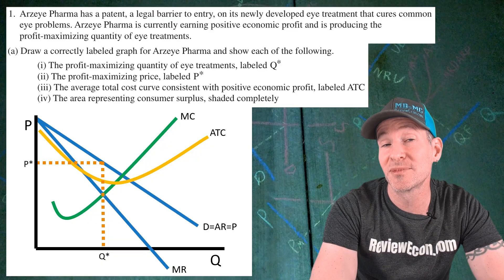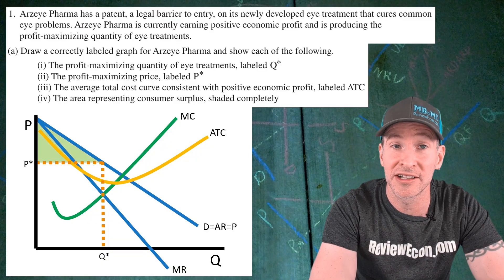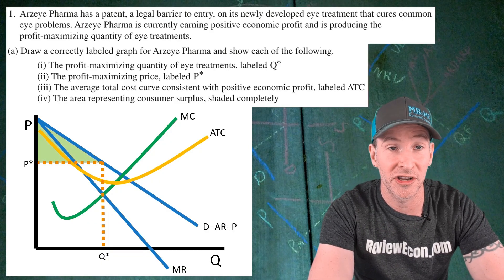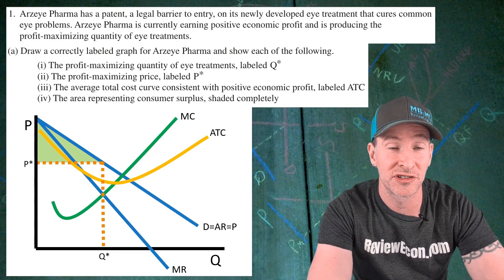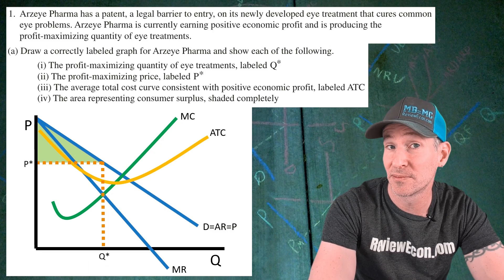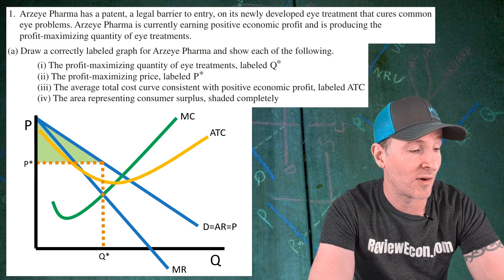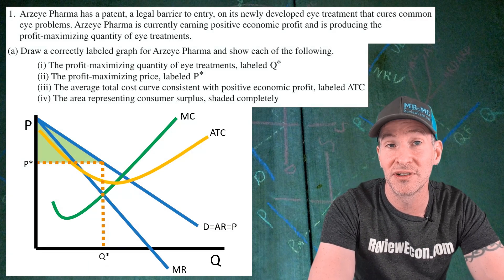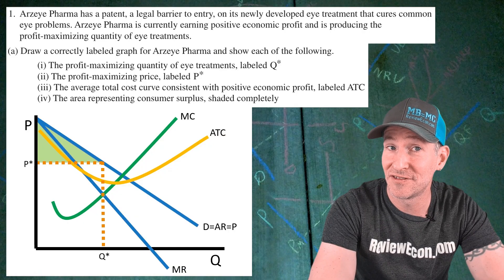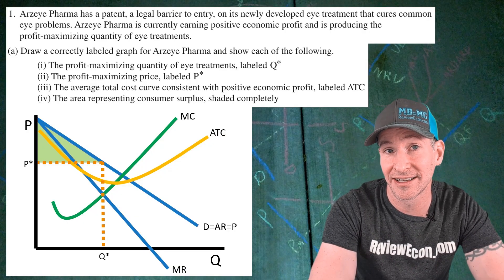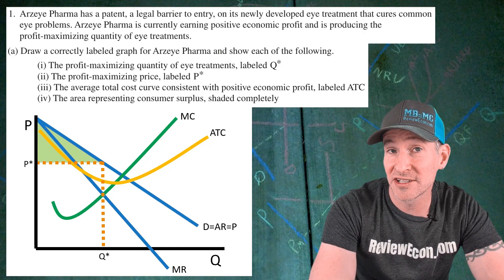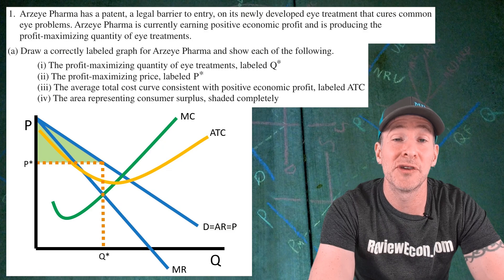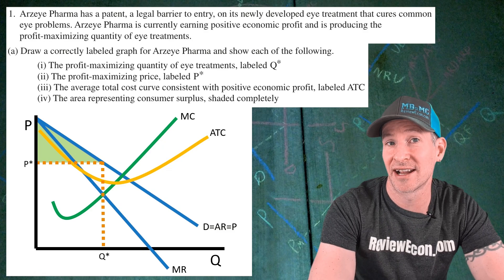The final point on this graph comes from shading in the consumer surplus completely. From the price of P star, you head over to the demand curve until you hit the profit maximizing quantity of Q star, then shade up to the demand curve. If you drew it all properly it's that triangle right there. When you draw this, it is best for the demand curve to hit the axis so that you have a clear triangle to shade.